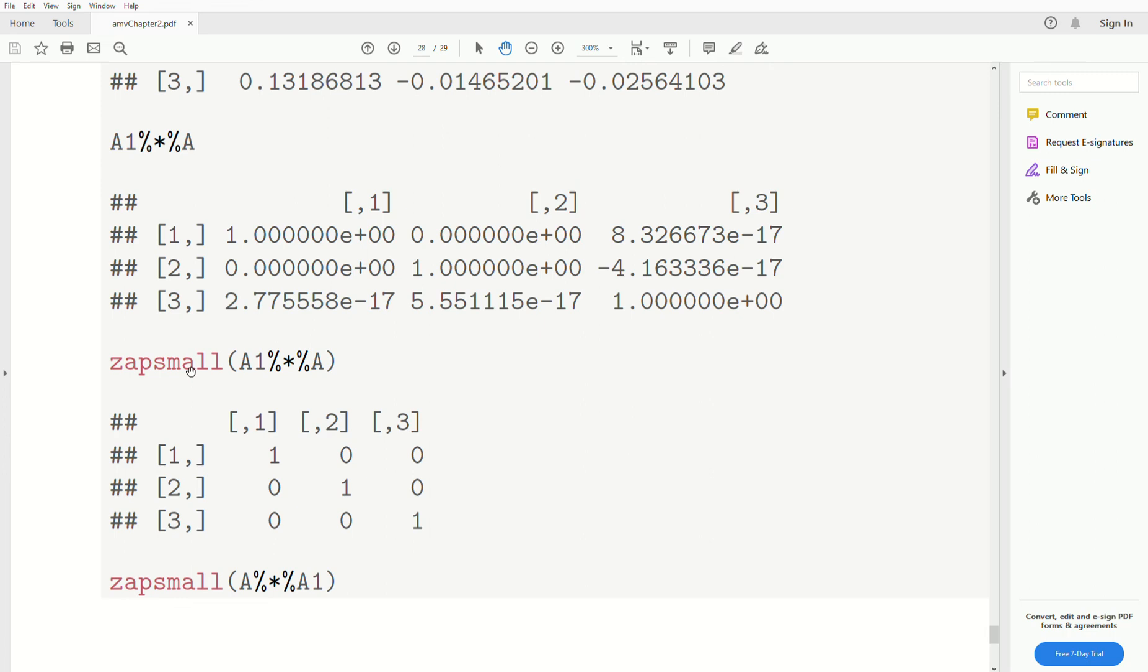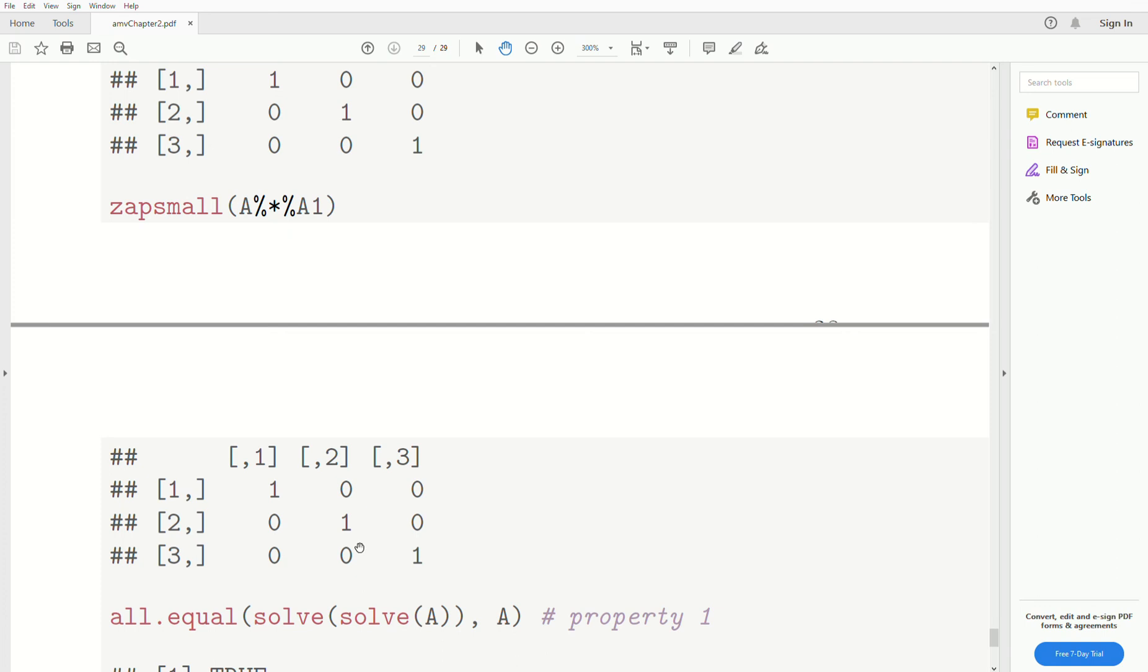Well, R has a function called zapsmall that kind of looks at the overall results. And if it's really, really close to 0, it just puts in 0. So A inverse times A is the identity. And A times A inverse is the identity.